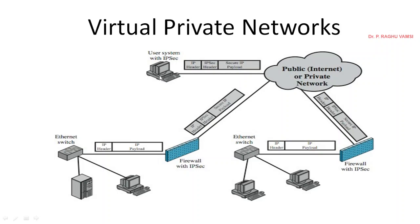This user system wants to establish a communication with a server on a particular organizational network, and another server or computer on another organizational network. This system wants to establish a connection between these computers using the public infrastructure called internet. Even though it uses the internet, a very secure channel must be established, and this channel should be private and highly secure, but created on the public infrastructure.